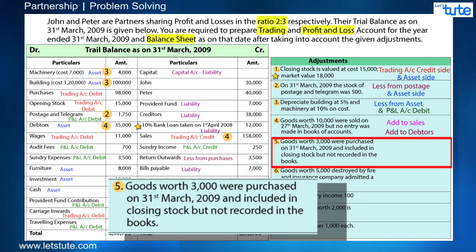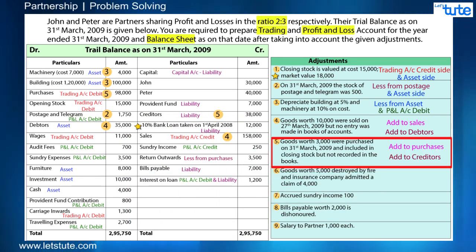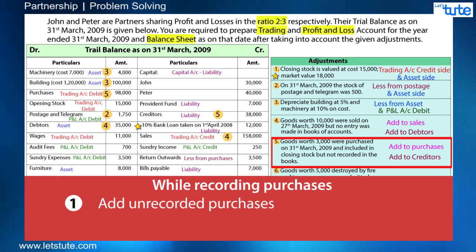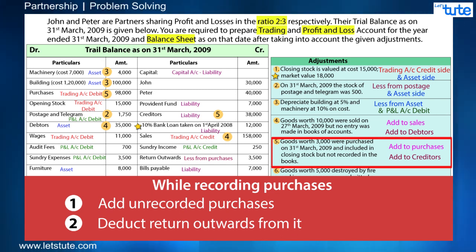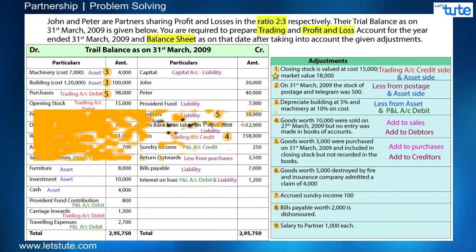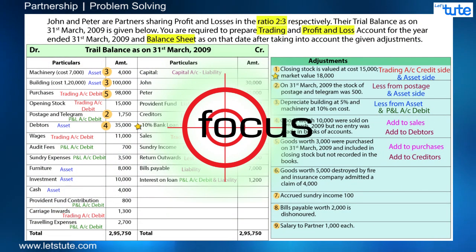This is unrecorded purchases, so the effect will be: add to purchases and add to creditors. Note that while recording purchases, first add the unrecorded purchases and then deduct returns outwards to get the true amount. Think carefully and write the effect — in a hurry, you might write trading credit instead of trading debit, so write with concentration.